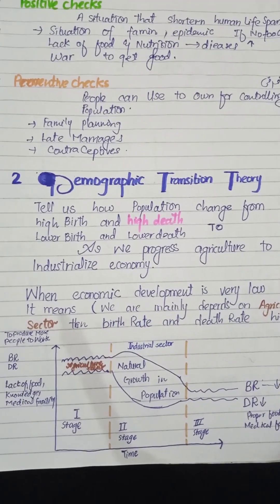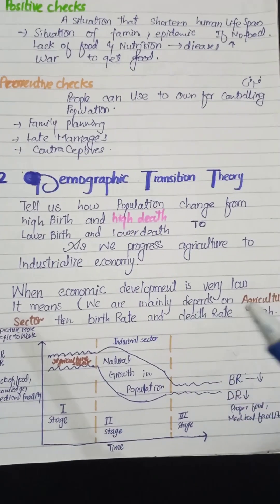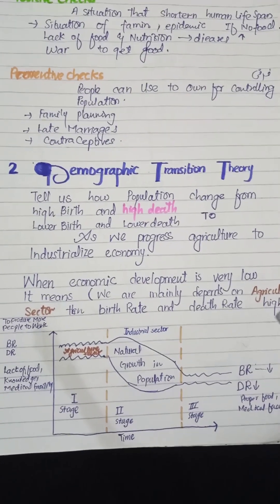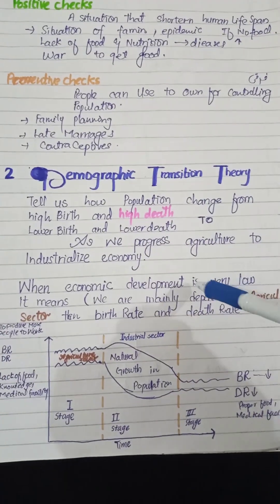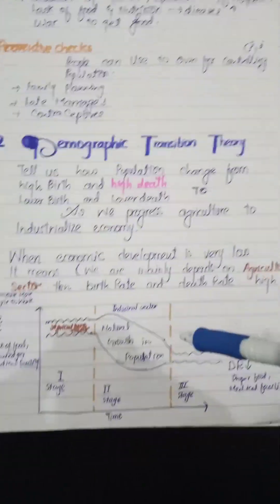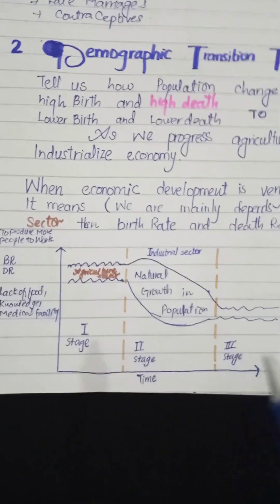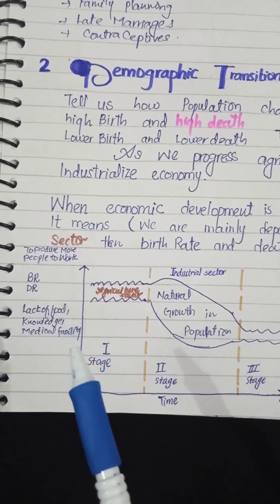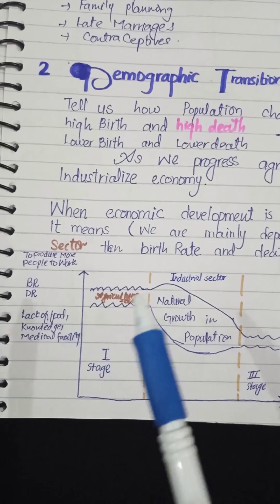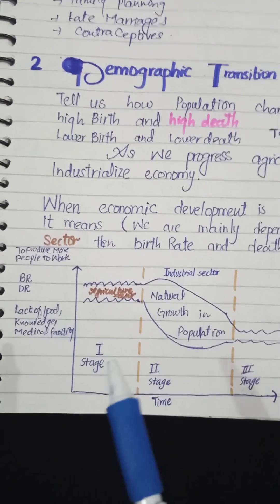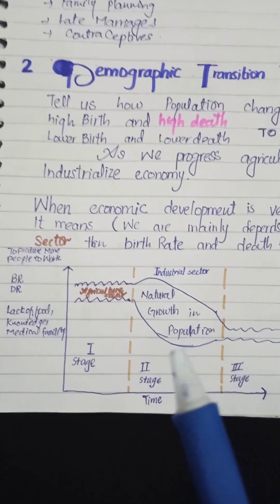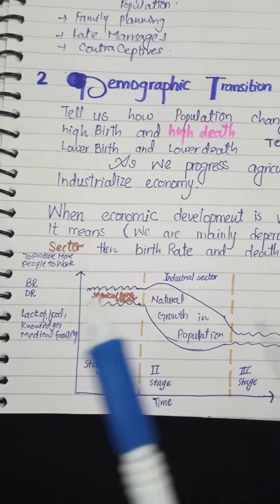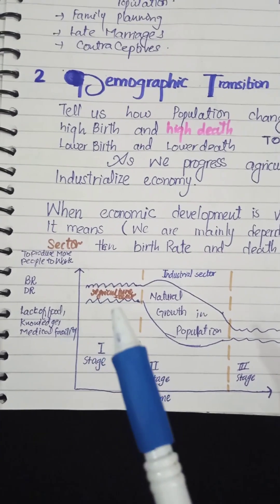In the first stage, when economic development is very low and we are mainly dependent on the agriculture sector, both the birth rate and death rate are high. In the diagram, we have time on the X axis and birth rate and death rate on the Y axis. Stage 1 is the agricultural sector with high birth rate and death rate.